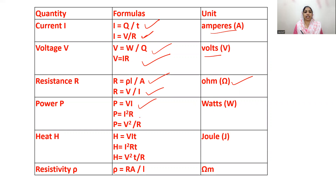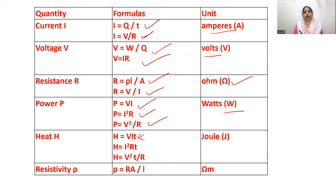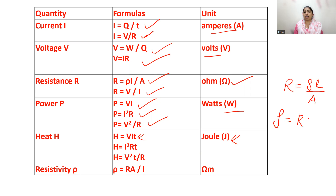We have three formulas for power: VI, I squared R, and V squared by R. The SI unit is Watt. For heat, multiply power by time: VIt, I squared RT, and V squared T by R. The SI unit is Joule. For resistivity, the formula is Rho equals R A by L.